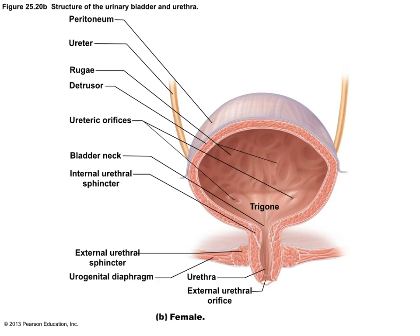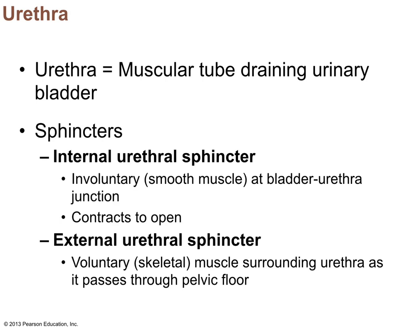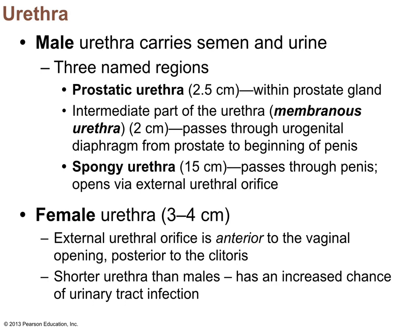The internal urethral sphincter is smooth muscle (involuntary), but unusually it contracts to open — unlike most sphincters which relax to open. The external urethral sphincter is skeletal muscle — voluntarily controlled. The male urethra has three parts: prostatic urethra, membranous urethra, and spongy urethra — making it much longer than the female urethra, which is why females have a much higher risk of urinary tract infections.